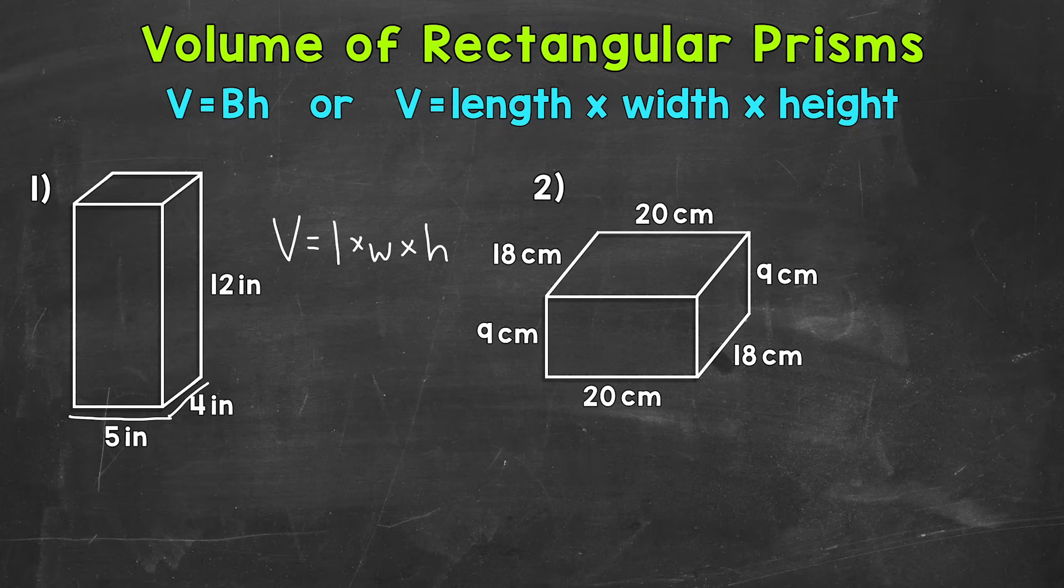Because 5 times 4 equals 20, and 4 times 5 equals 20. So either way, you're going to get the correct area of the base, which is going to be 20 square inches. So let's plug in the length and width here. So the length of 5 times the width of 4 times our height of 12 here.